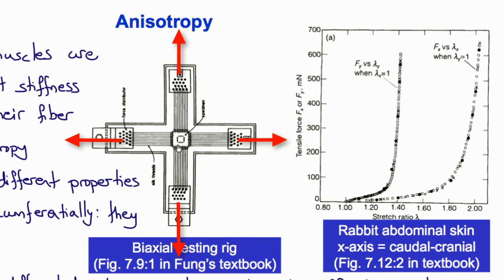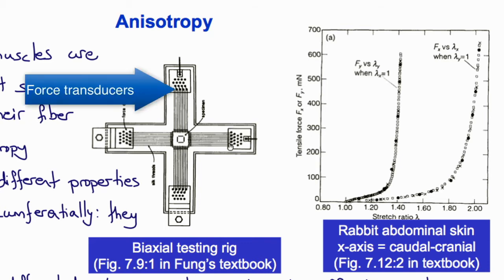Usually in a biaxial test device like this, the strain is measured by visualizing the displacement of markers in the middle of the specimen away from the tethered edges. The test device pulls equally in both directions to keep the specimen centered, but doesn't have to pull equally in both directions, so a variety of different multi-axial stretch ratios can be applied. Force transducers are attached to these strings, and so the forces can be divided by the cross-sectional area to obtain the stresses.